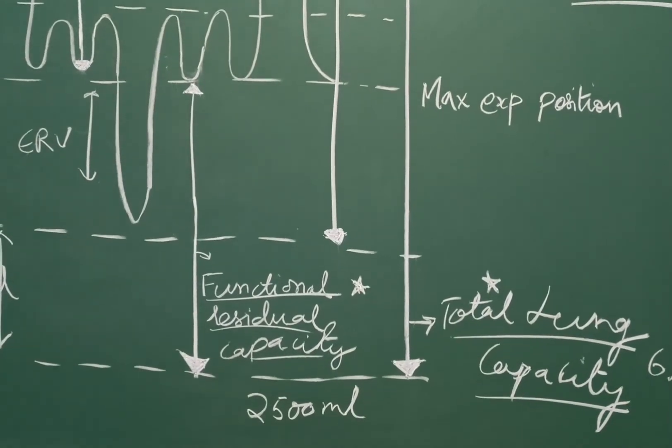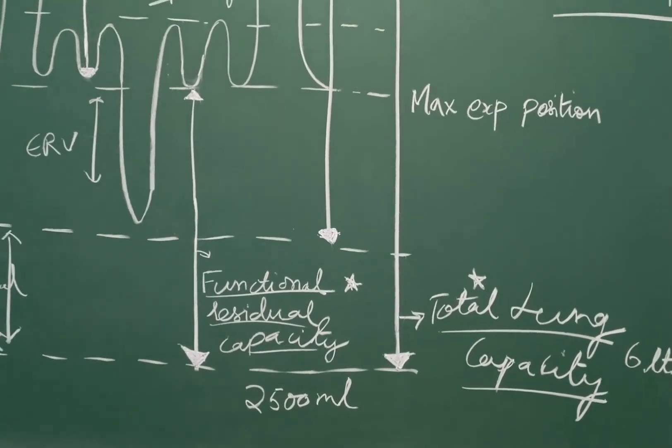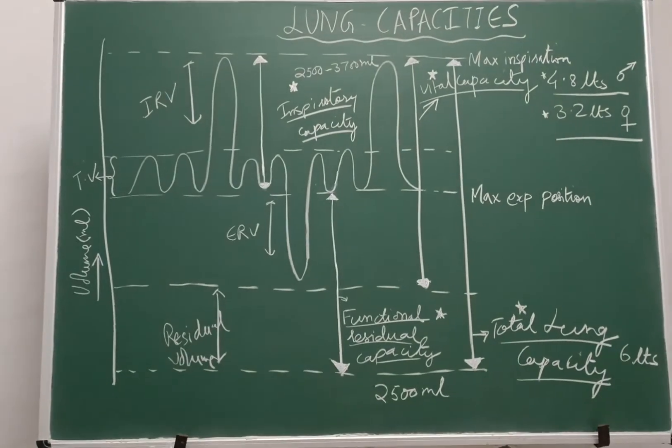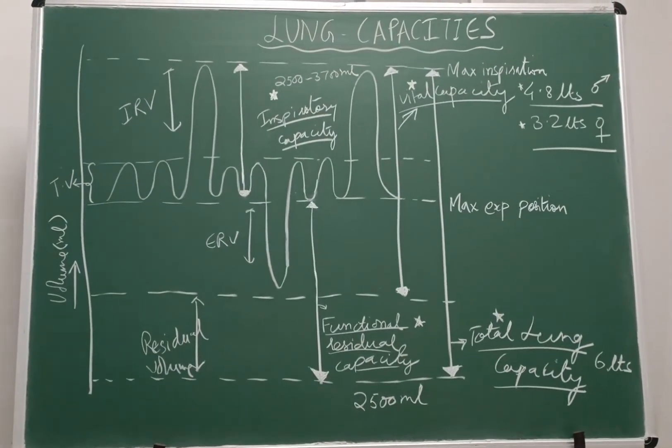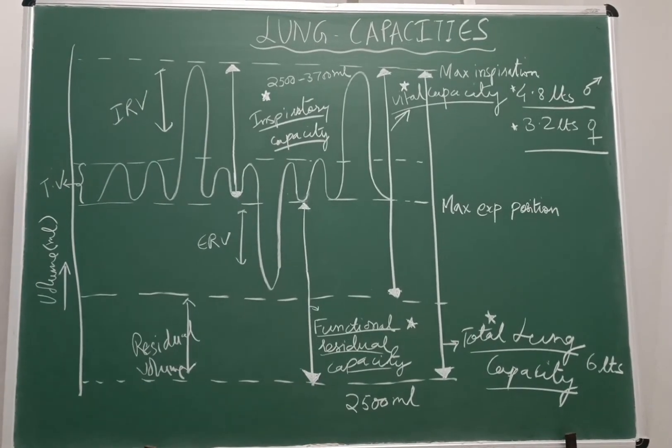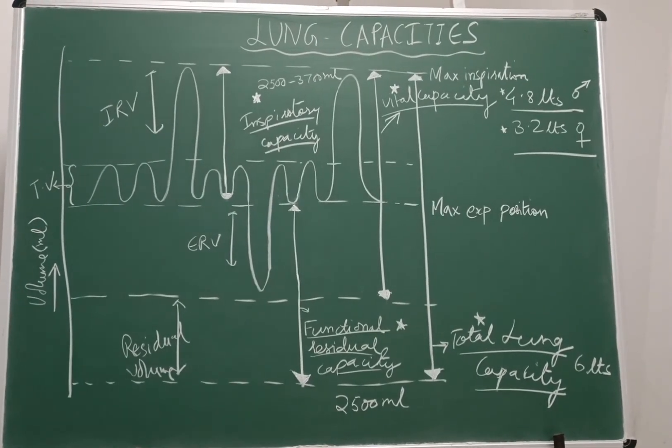So there are 4 important capacities: inspiratory capacity, vital capacity, functional residual capacity and total lung capacity. These capacities can be determined by using spirometer.